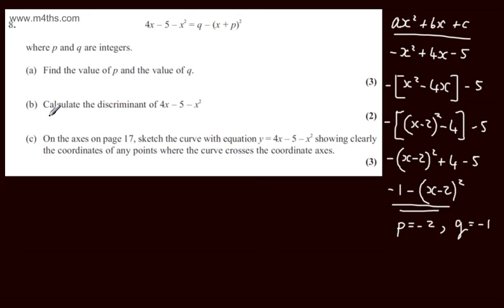In part B we're asked to calculate the discriminant of 4x minus 5 minus x squared. I've put it in the form ax squared plus bx plus c. The discriminant is b squared minus 4ac. Let's now consider the values of a, b, and c.